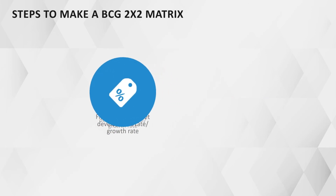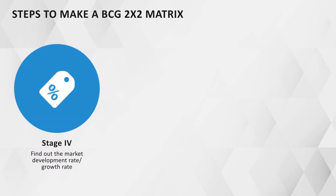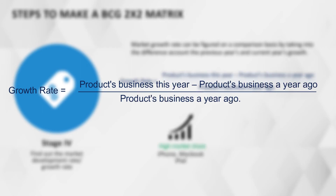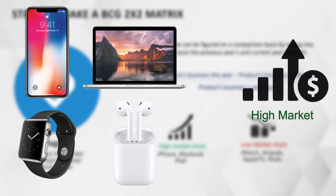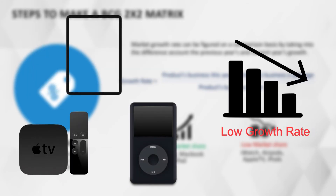Stage 4: Find out the market growth rate. Market growth rate can be calculated by taking into account the difference between the previous year's and the current year's growth. iPhone, MacBook, iWatch, and AirPods showcase a high market growth rate, while iPad, Apple TV, and iPod showcase a low growth rate.